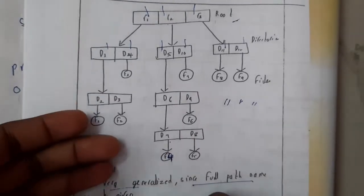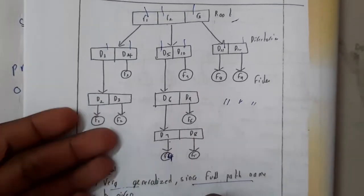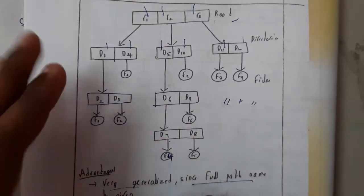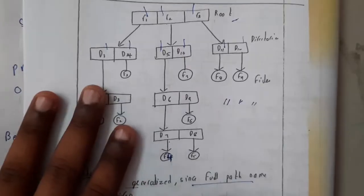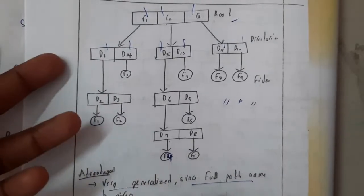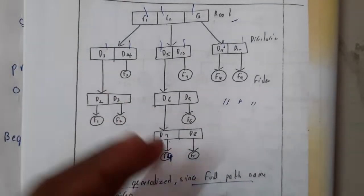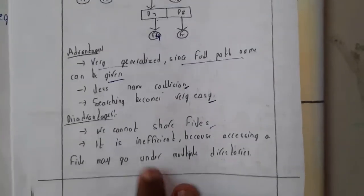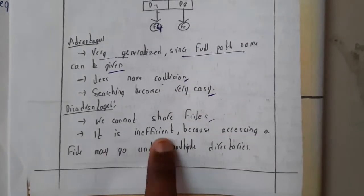It is inefficient because accessing files may take under multiple directories. Let us assume you want to hide something in your system, so you can create n number of folders one inside the other. Some end user, if someone comes, he'll be opening two or three folders. After that, he'll be bored to open all the folders like 100 or 200 if you create in that way. That will be an issue. That is why this is inefficient.